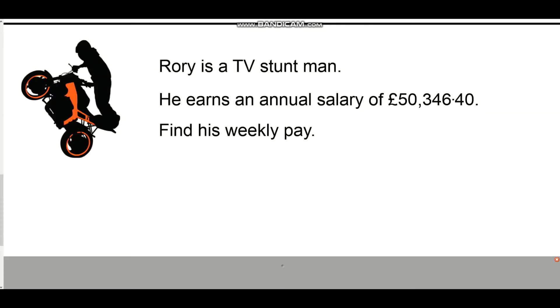One more quick example about this. Rory is a TV stuntman. He earns an annual salary of £50,346.40. You need to find his weekly pay this time. Highlighting the things that are important, we've got weekly pay and we've got annual salary that we know about, which is £50,346.40. We want to find weekly pay. We need to divide because we've already got the yearly, so we're dividing to find something smaller. We need to divide by how many weeks in the year, which is 52.